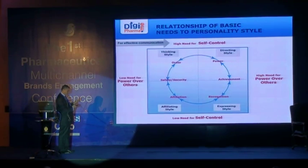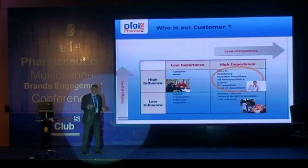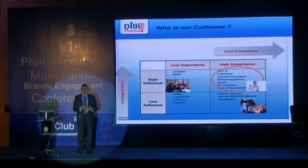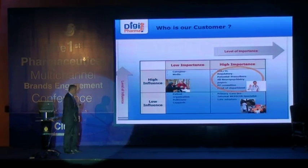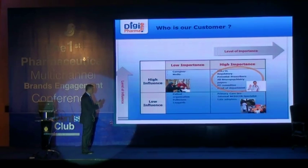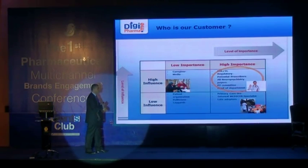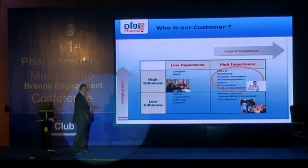We have two dimensions: understanding if the doctor is high potential, and whether they have influence inside their key account. We need this data in our CRM system. If a customer is important but has low influence, I can approach them after product listing — but at entry level, I need high importance and high influence. We have a complex set of stakeholders: KOLs, thought leaders, regulatory, potential prescribers, payers, PT committees, heads of department, primary care doctors, politicians, patients, media, and caregivers.